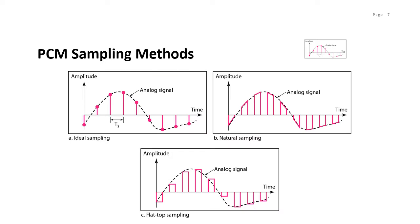Let's look at the first step in pulse code modulation, which is sampling. There are three sampling methods: ideal, natural, and flat top. In ideal sampling, pulses from the analog signal are sampled. This is an ideal method and cannot be easily implemented. The next sampling method is natural sampling, where we have a high-speed switch turned on for a very small period of time, and that is when the sampling occurs. The result is a sequence of samples that retain the shape of the analog signal.